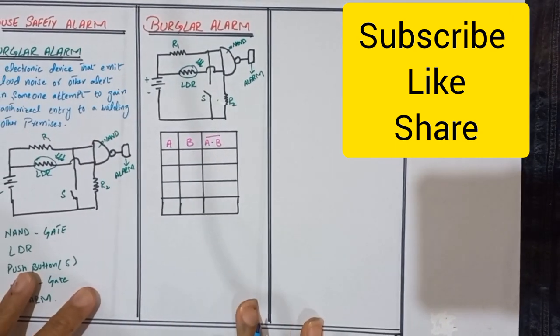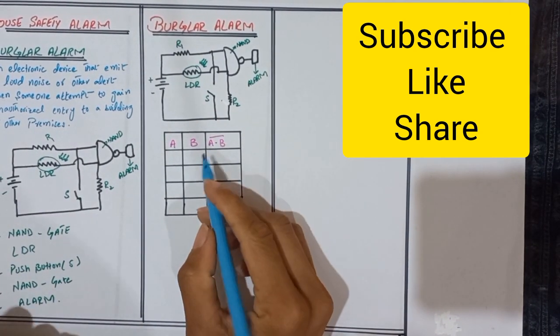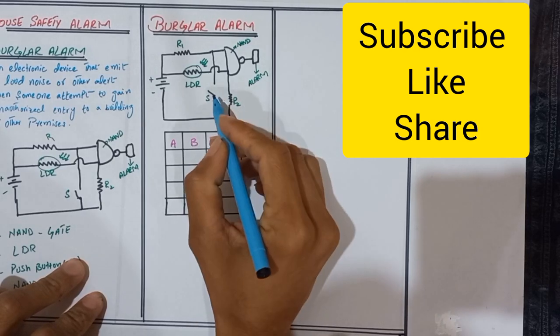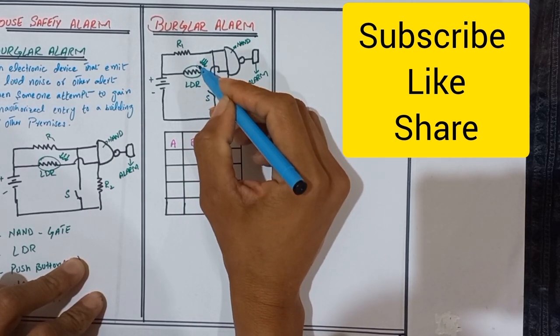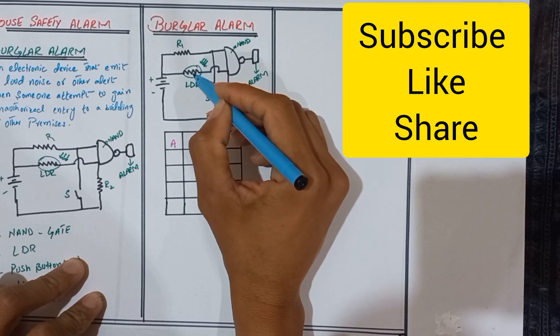Now we discuss the Burglar Alarm. How does Burglar Alarm work? When the switch is closed then its input is zero. LDR input is zero when light is not falling upon the LDR resistor.